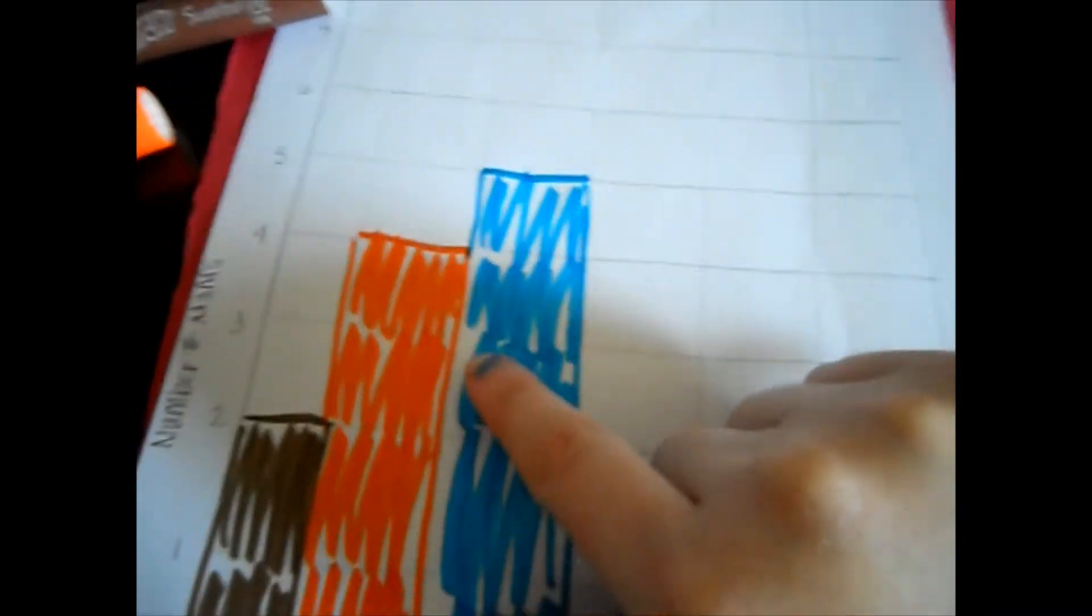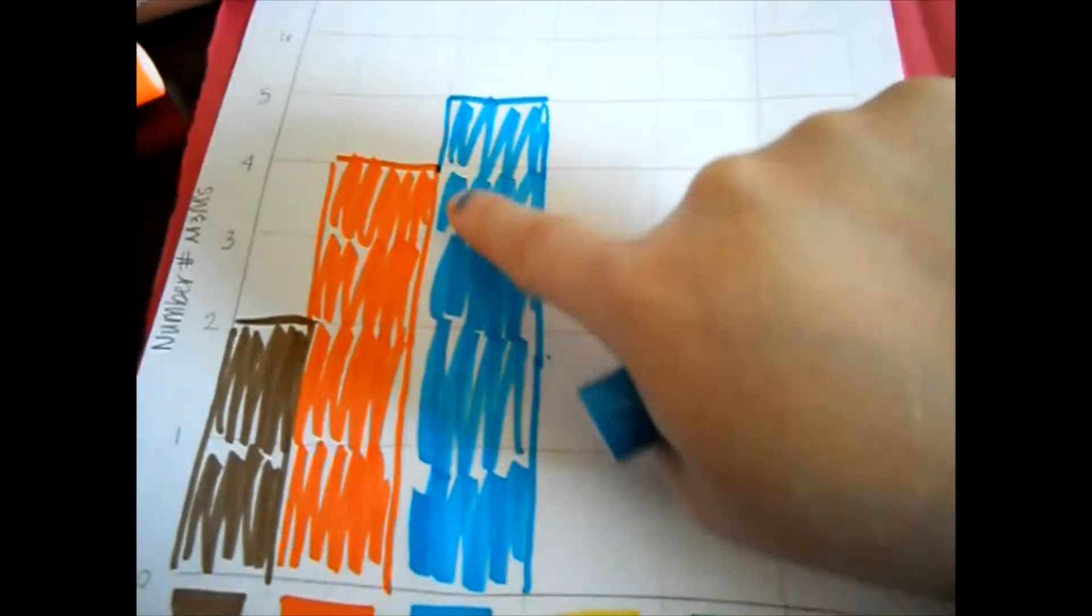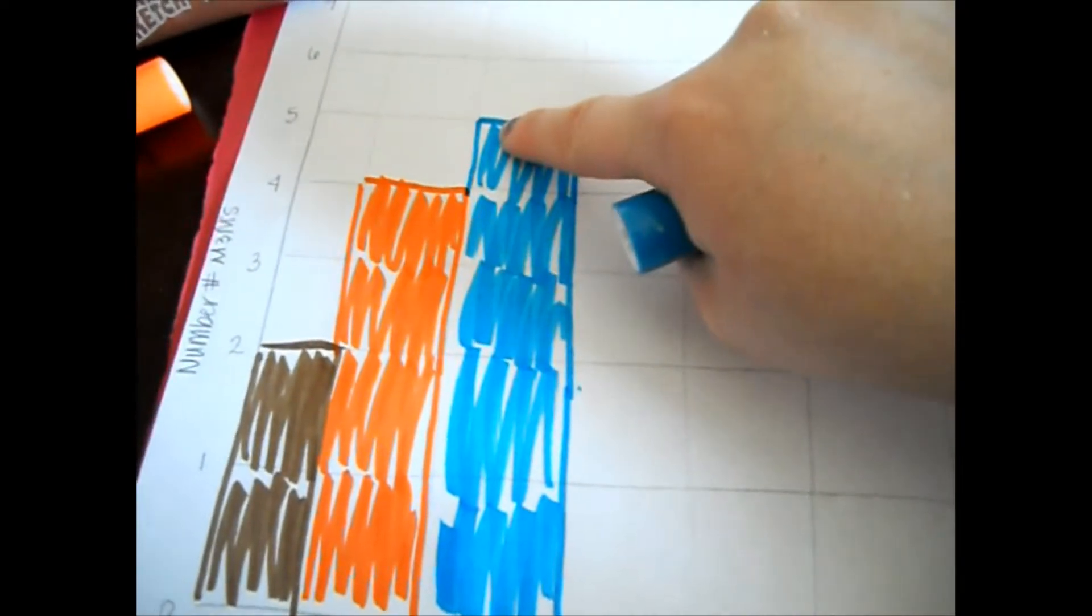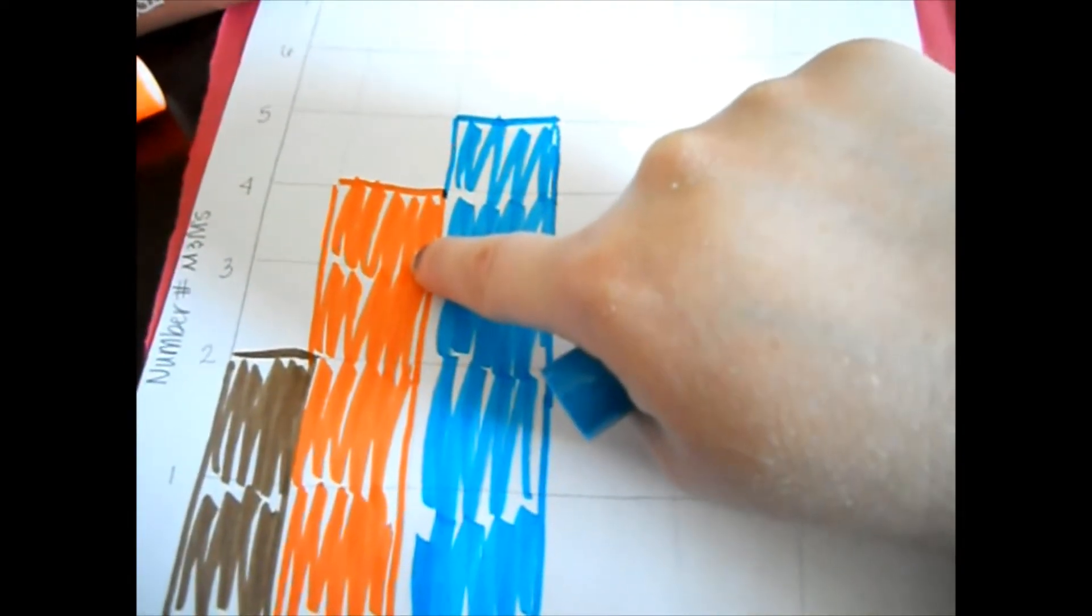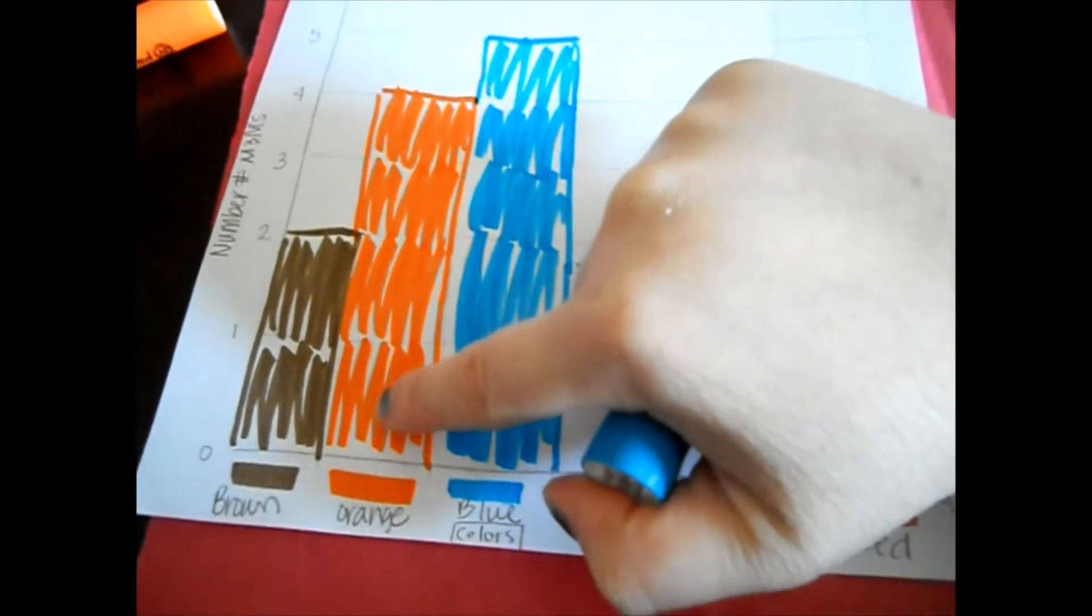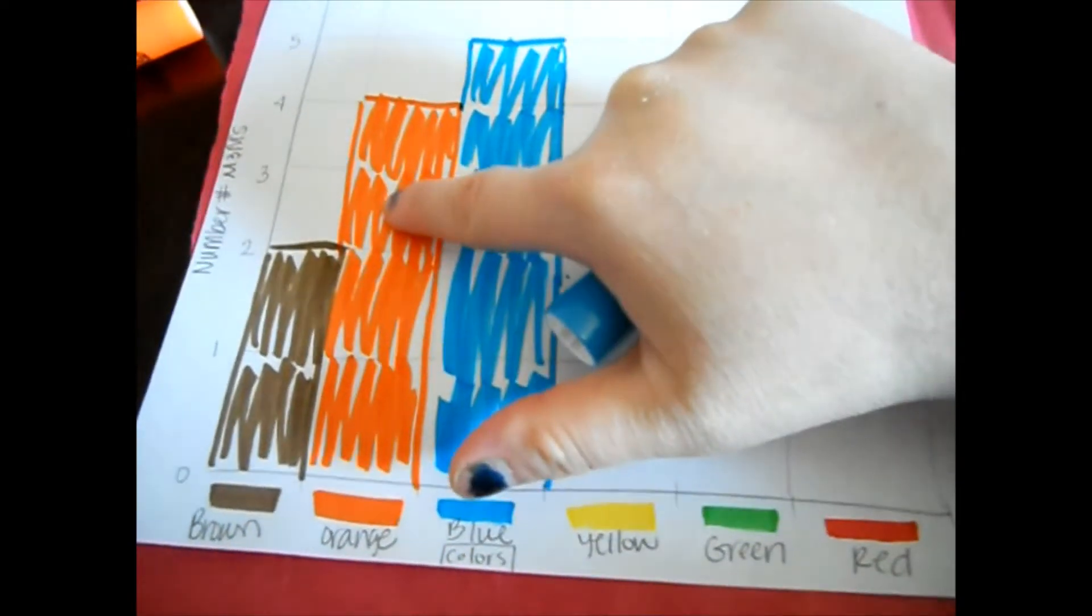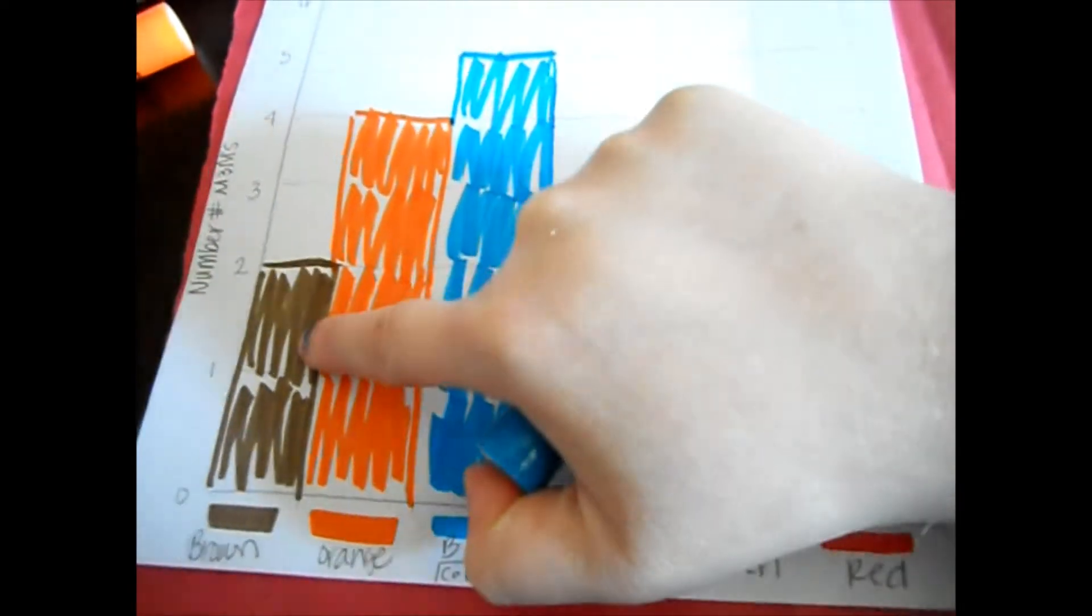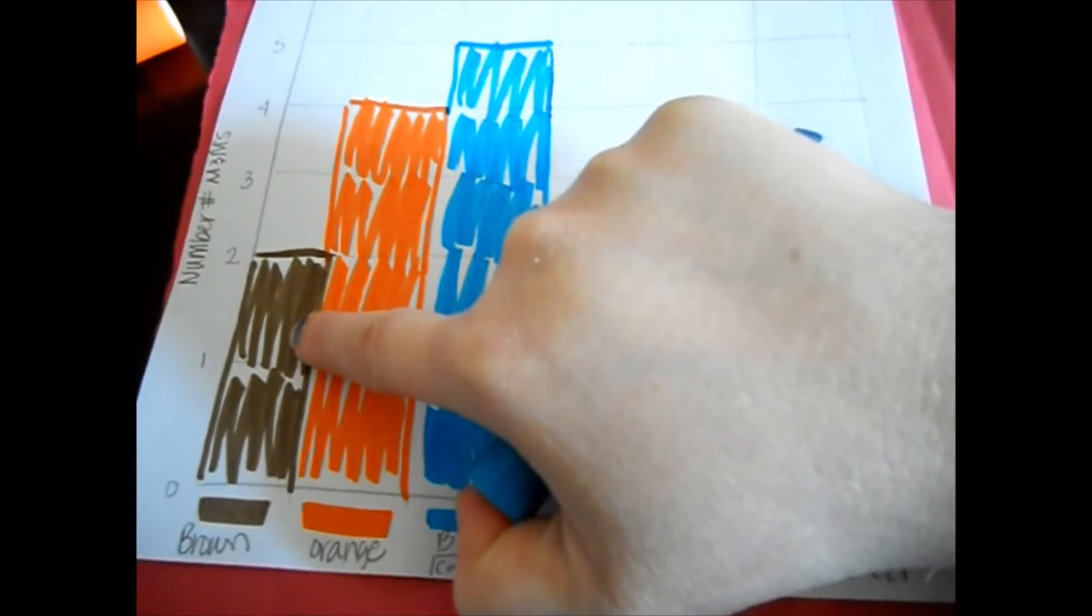So now you can point out, oh, I noticed that the blue has one more square than the orange. Or you can say, I noticed that the orange has one, two more than the brown.